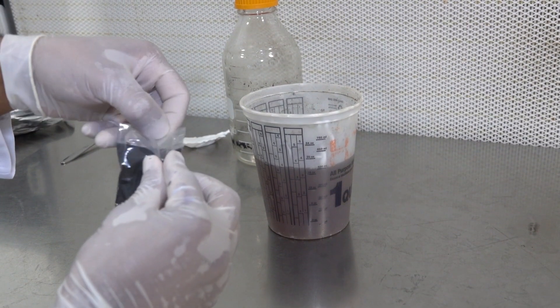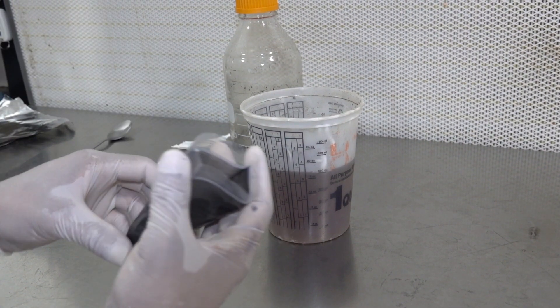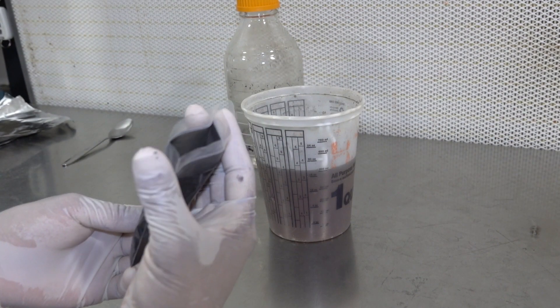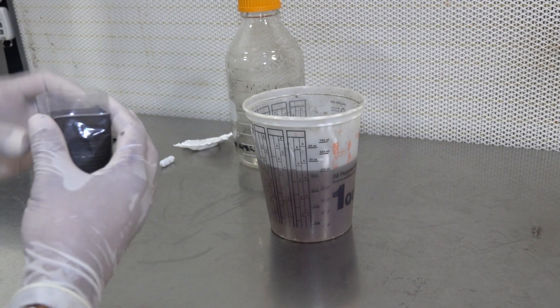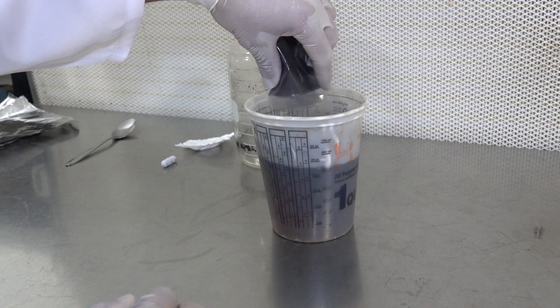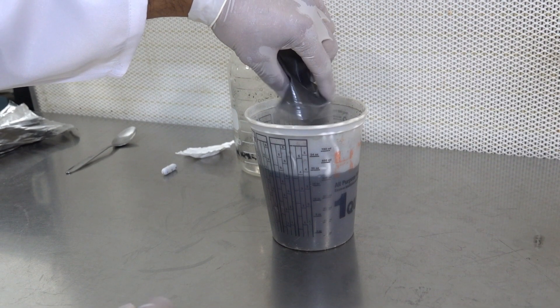And here is our charcoal pre-mix. In this case it is malt extract agar with charcoal. We're going to dump the whole thing in here and this will prepare 500 milliliters of agar for pouring into 20 100-millimeter dishes.